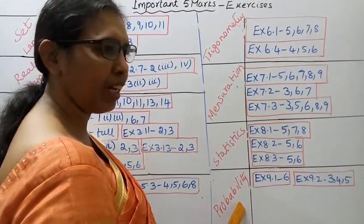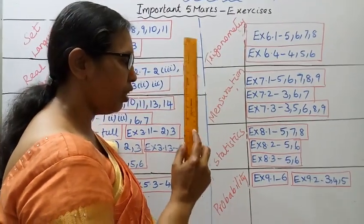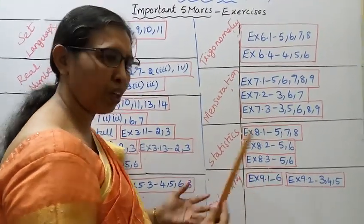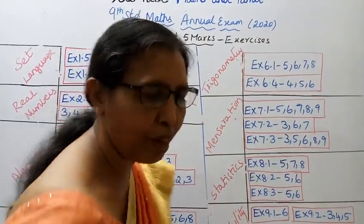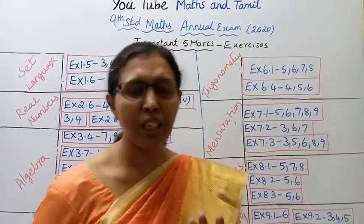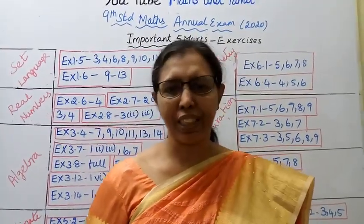For probability, practice the examples first. There are 4 sums and 6 sums worth 5 marks. Practice the examples first, then the exercises.